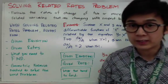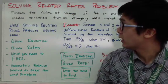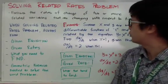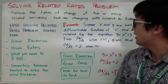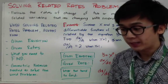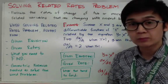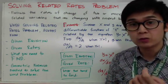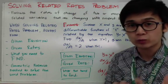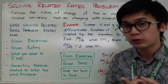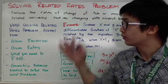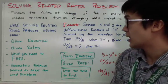By definition, related rates are finding the rates of change of two or more related variables that are changing with respect to time. In word problems involving related rates, you will always work with at least two variables.